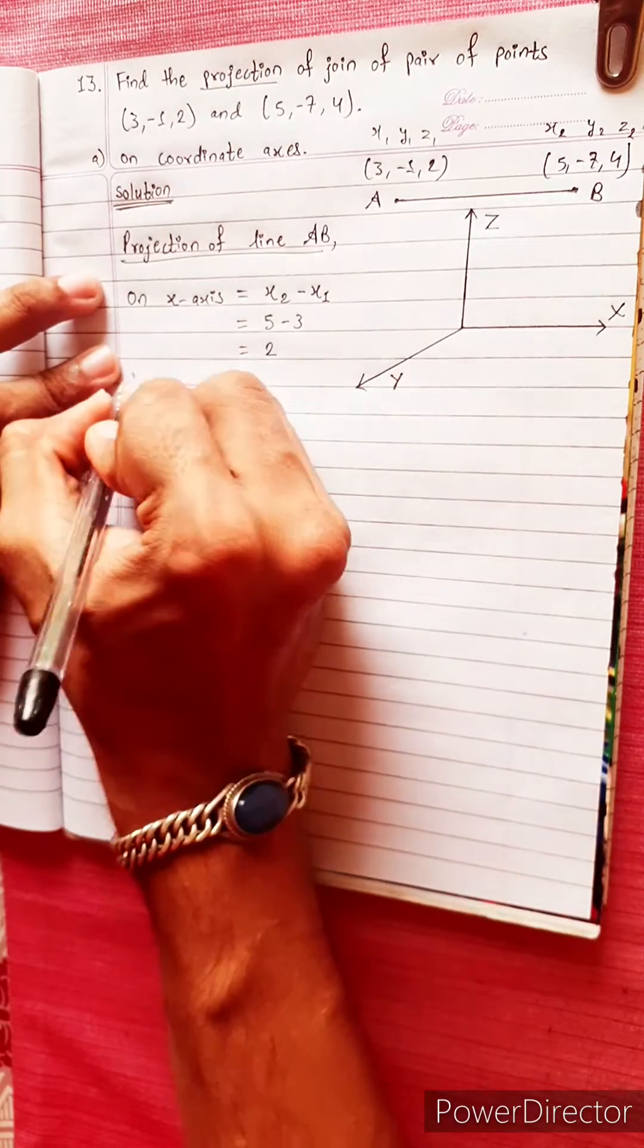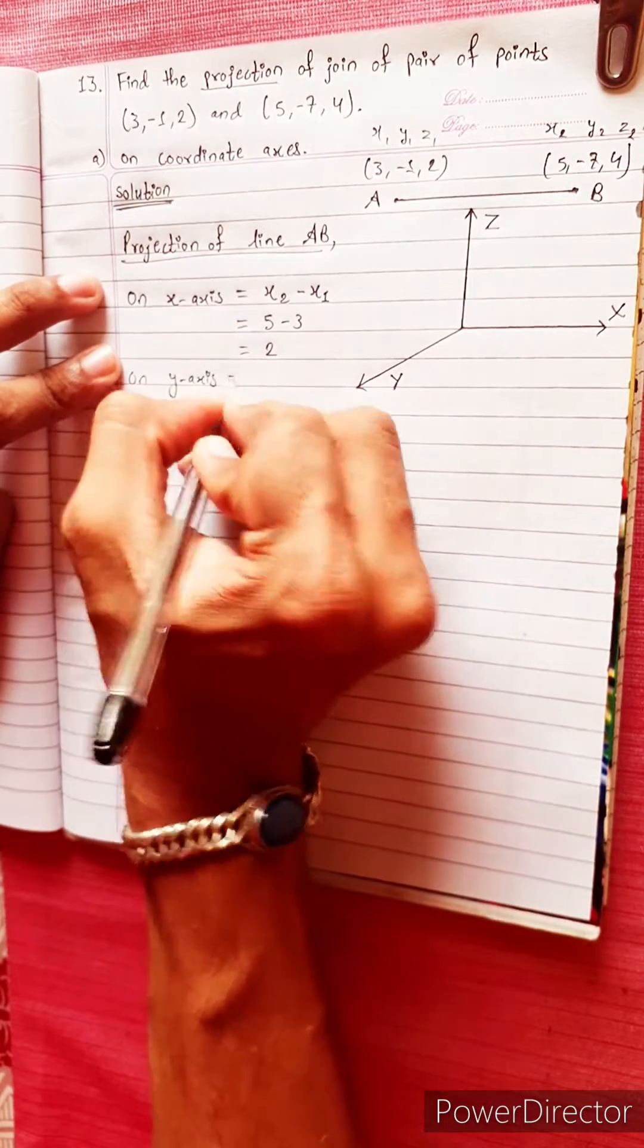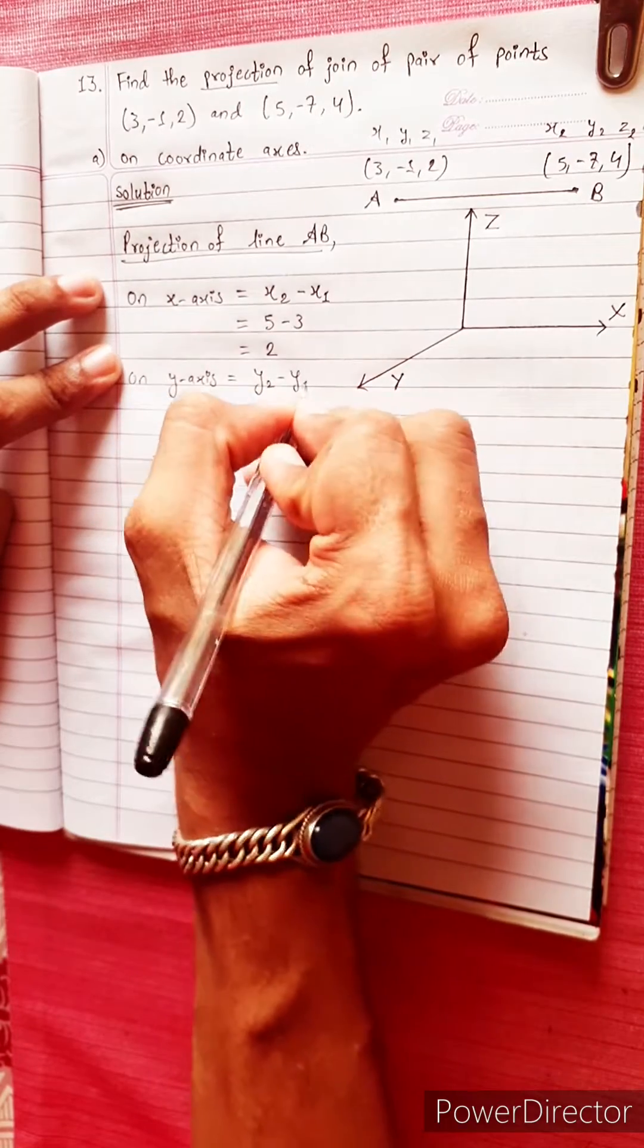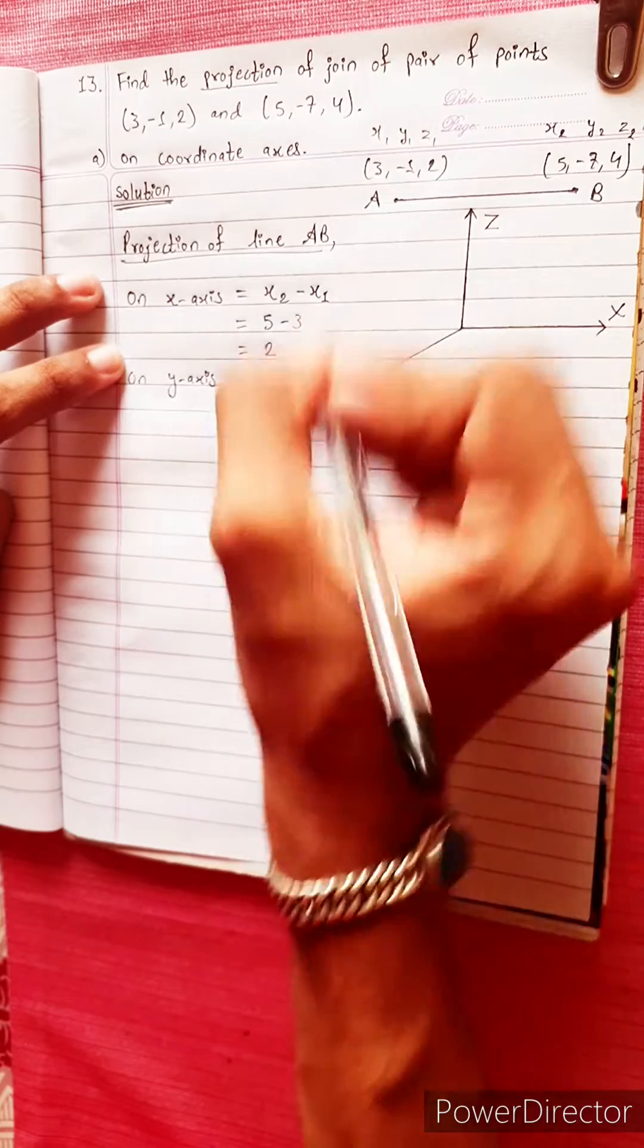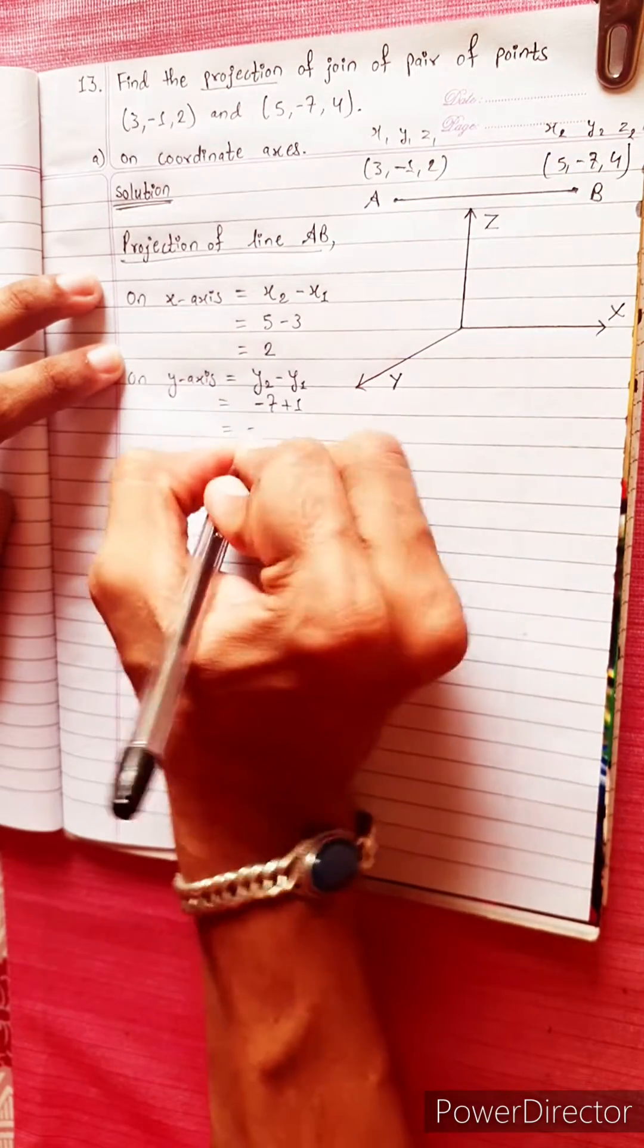Projection of line AB on y-axis. The formula is y2 minus y1. Equal to -7 minus -1, which is minus 6.